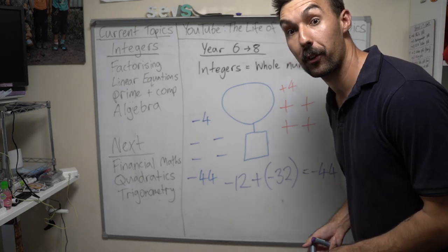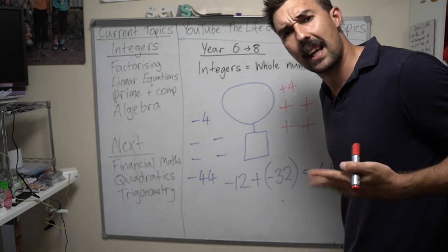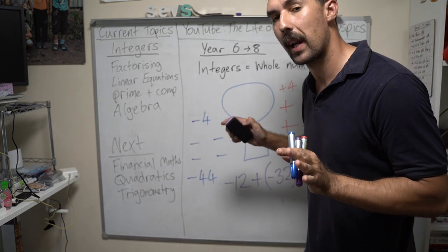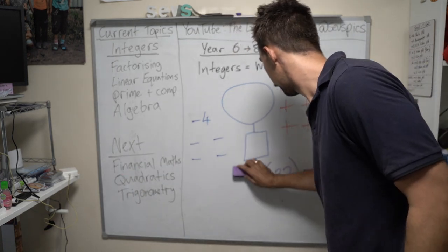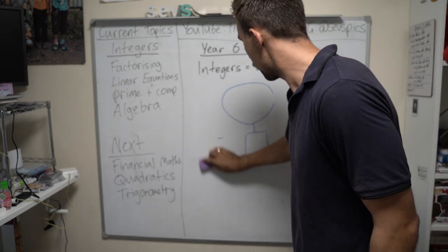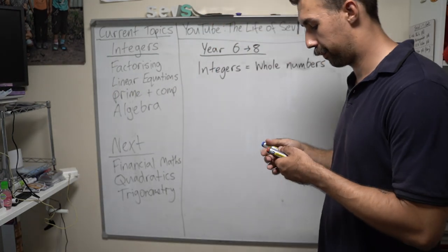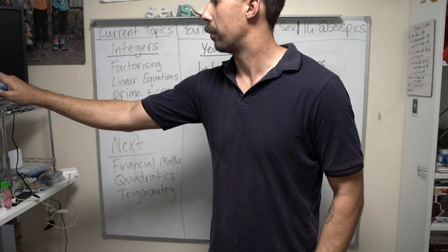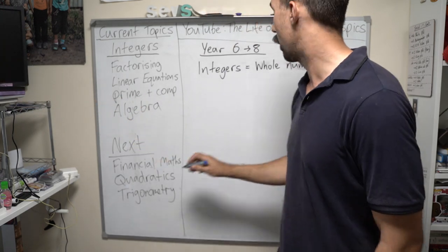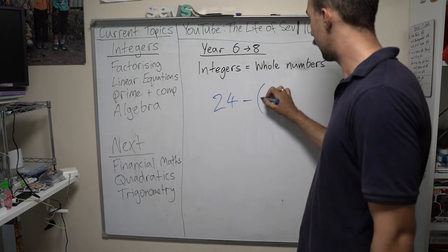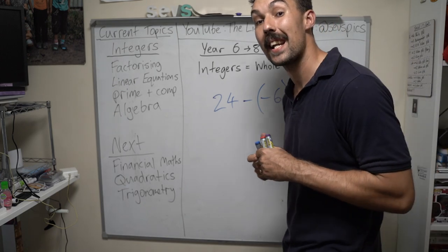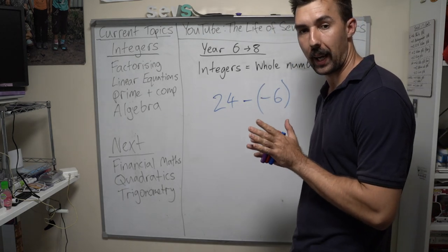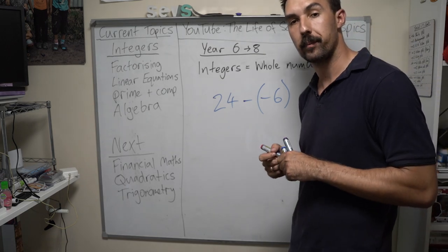How about that for a maths trick? Does that make a little bit easier to understand integers? I'm going to test you on this one — keep thinking about hot air balloons, sandbags and flames. Let's go with another problem: 24 take away negative 6. Taking away negative.